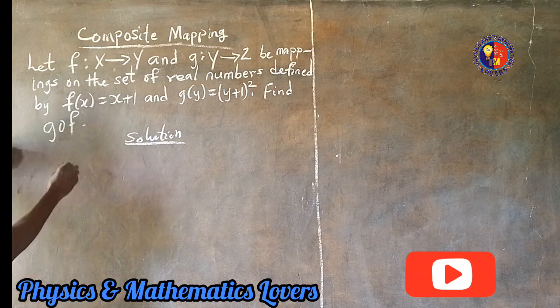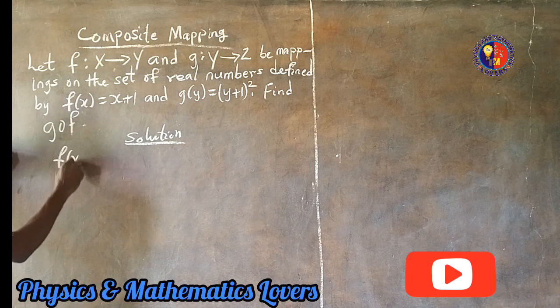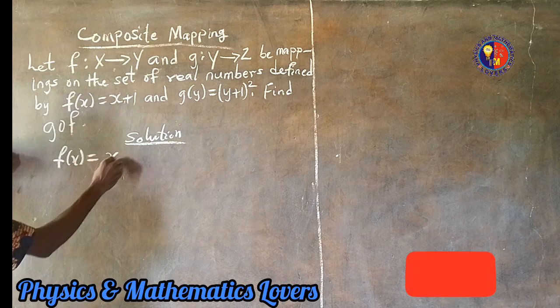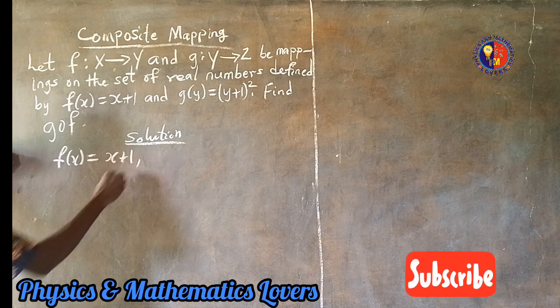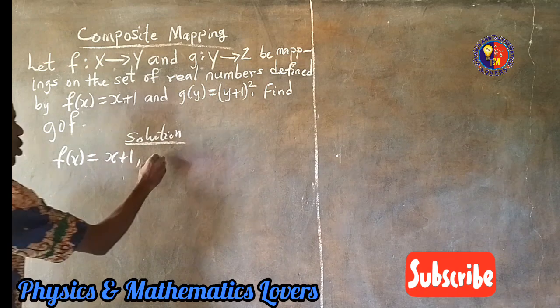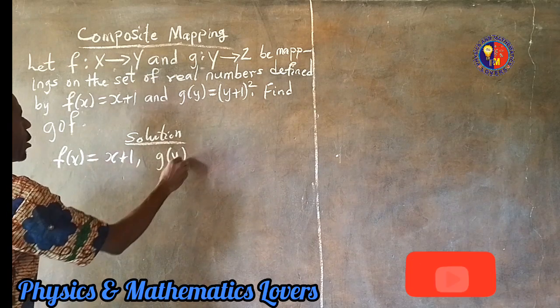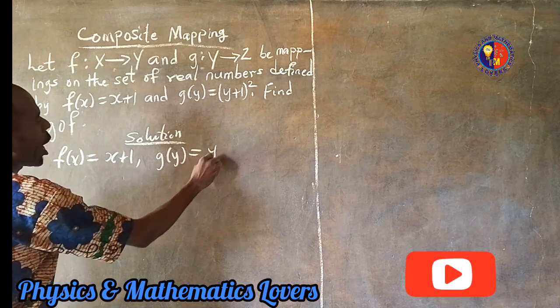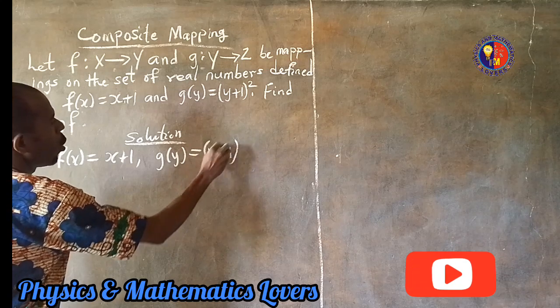we have f(x) equal to what? f(x) equal to x plus 1. Then we also have in this mapping g, we have g(y) equal to (y plus 1) all squared.